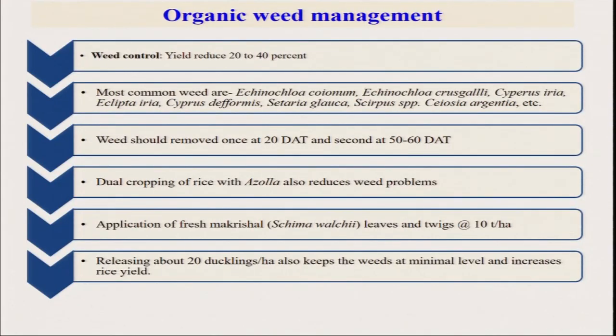We need different approaches — if rice is grown in line transplanting using SRI or ICM method, we can run the Kono weeder, which reduces cost. Whatever weeds are incorporated by the Kono weeder go back into the soil, enhancing soil fertility. Common weeds include Echinochloa colonum, Echinochloa crus-galli, Cyperus iria, Cyperus deformis, and others. Weeds should be removed by two hand-weedings — first at 20 days after transplanting, second at 50 to 60 days. For weed control, we also use Azolla application. Another approach is rice-cum-duck farming — ducks raised near ponds are allowed into the rice field, where they eat weeds and insects, indirectly controlling insect populations and reducing the weed problem.